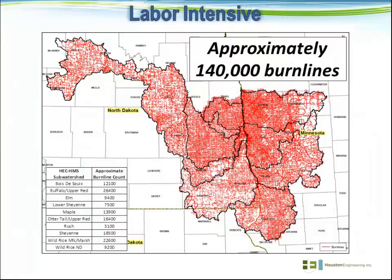In terms of what actually goes into reconditioning a DEM, to get a DEM that's at a fairly high scale or high precision of accuracy, it takes a lot of manpower to get there. This shows an example of the southern portion of the Red River Basin where a reconditioning project was completed to develop HEC-HMS hydrologic models, and approximately 140,000 burn lines had to be utilized to get a DEM to serve that specific purpose.